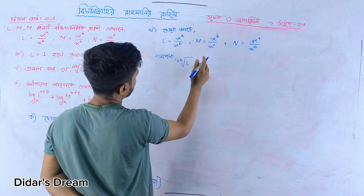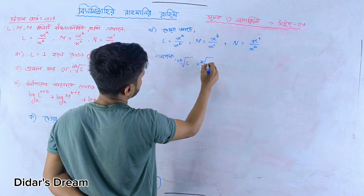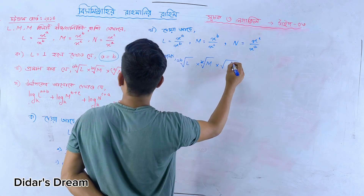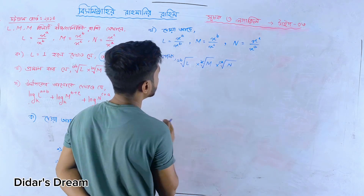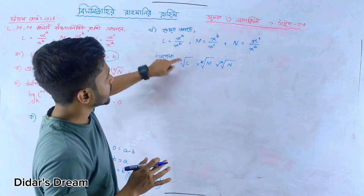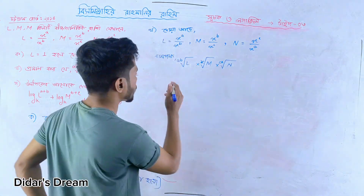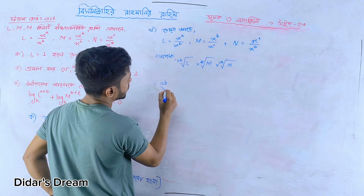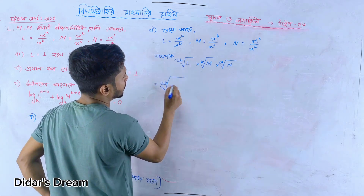b times the c-th root over m, into the c-th root over n. That's right. Just something you can do with this. Simply, we can do this. The root is to be applied.